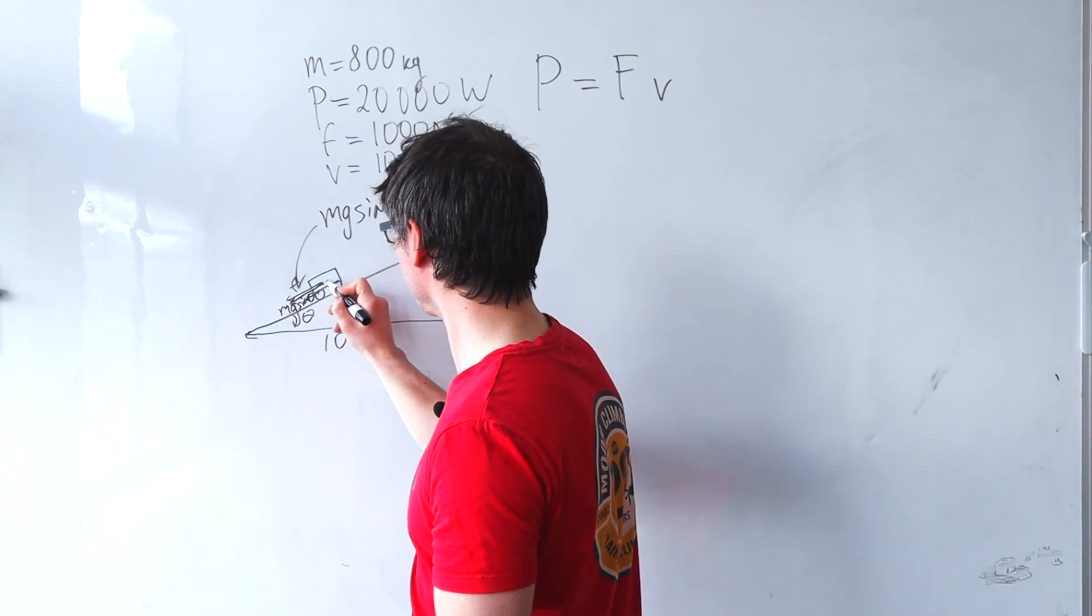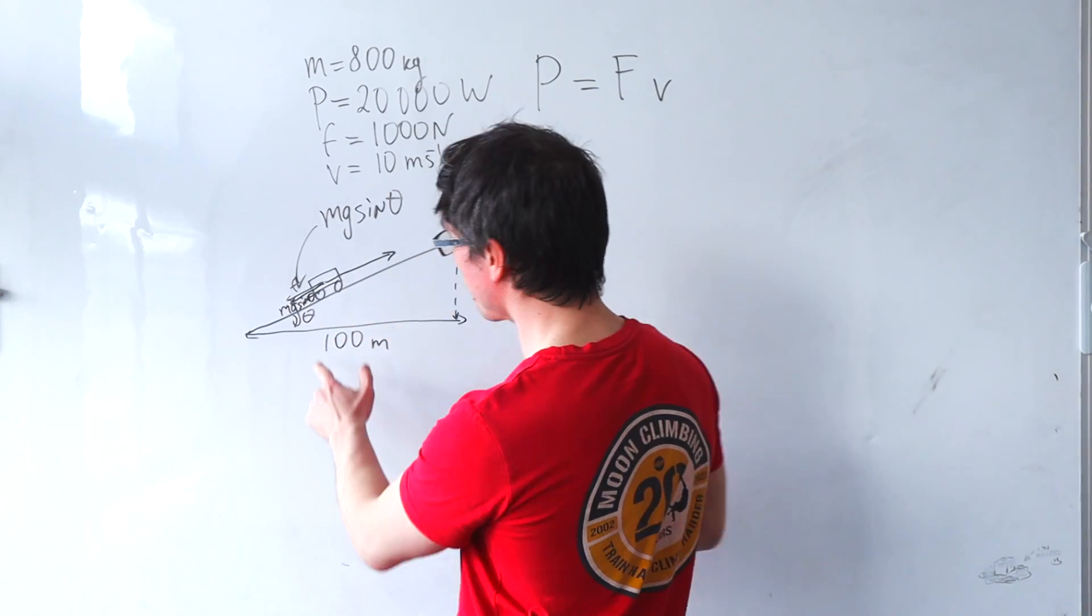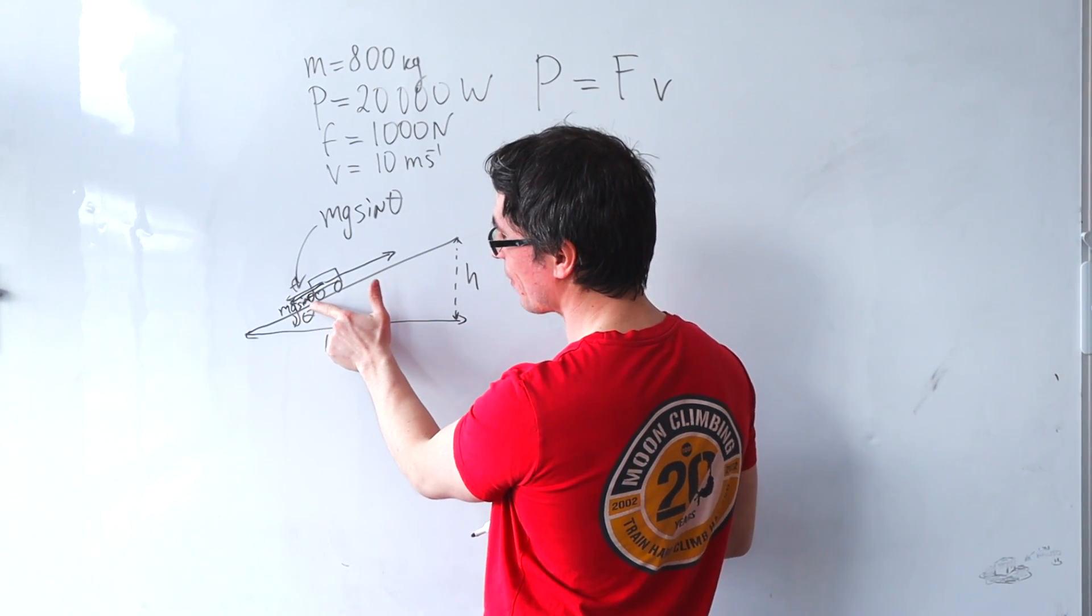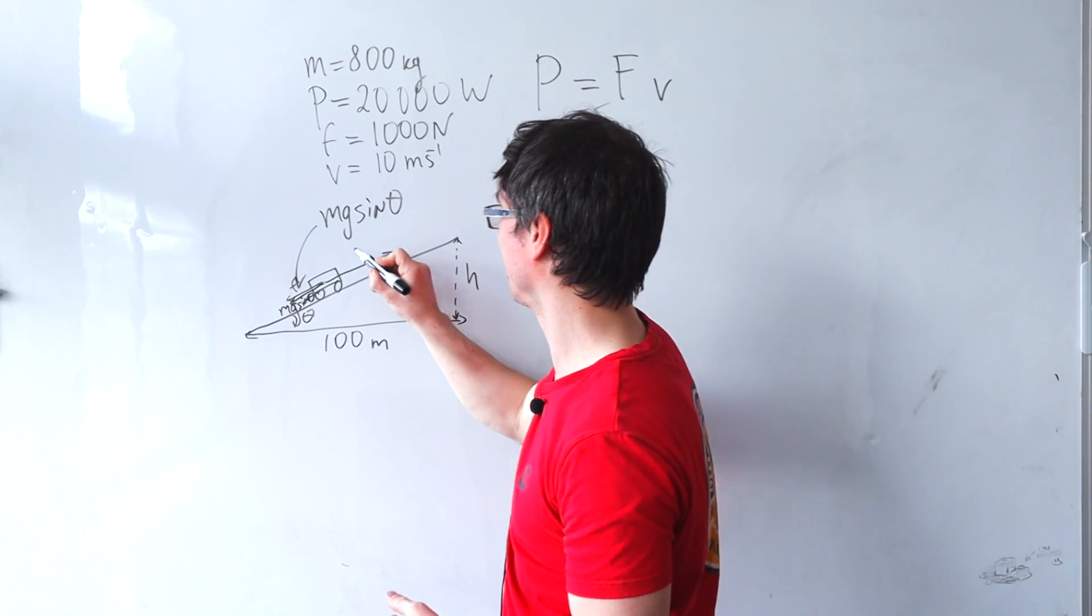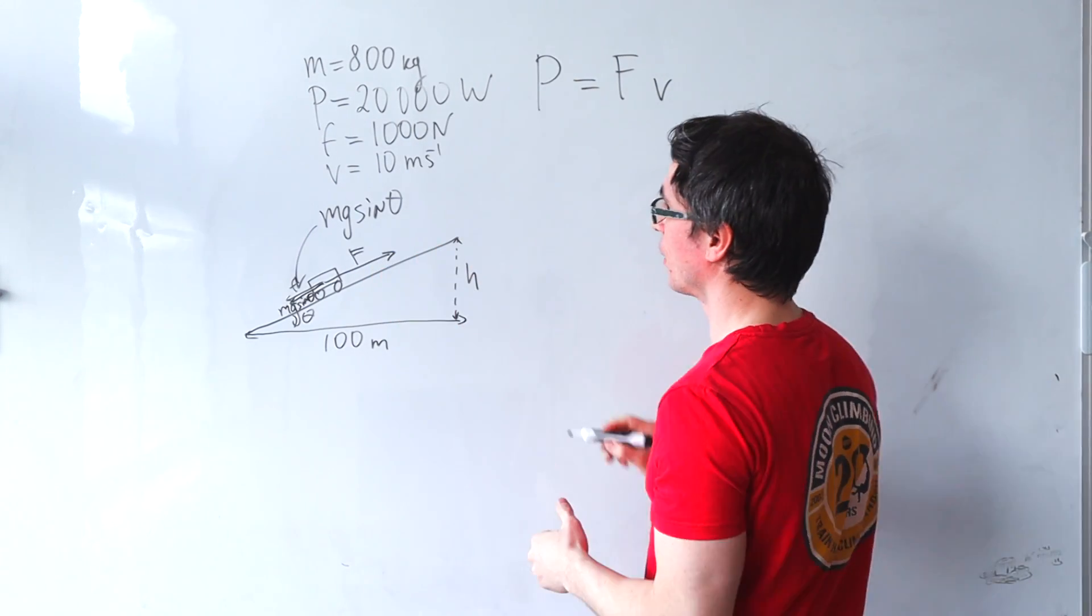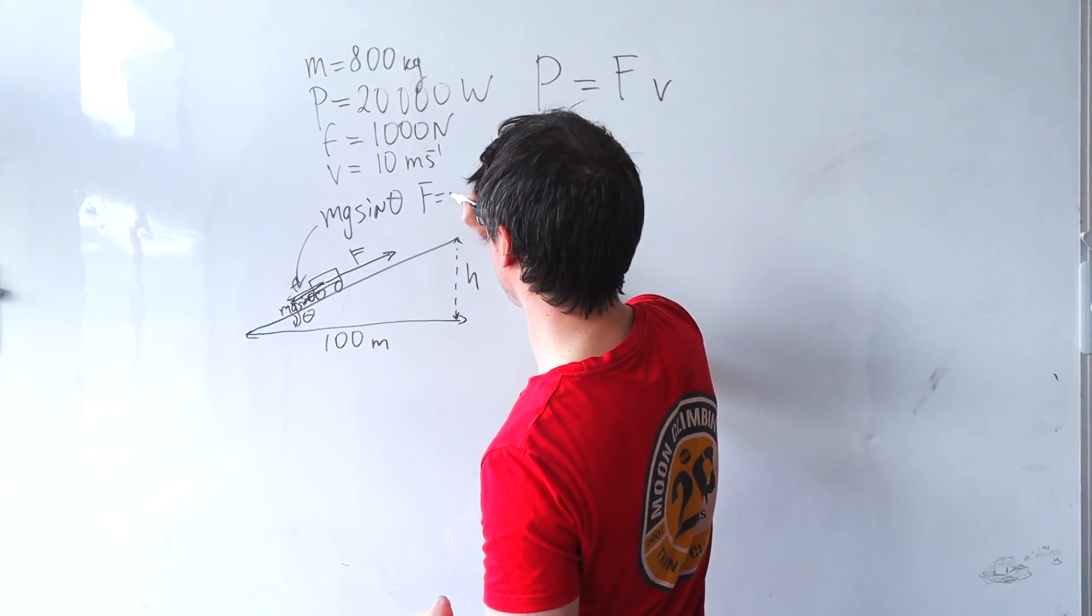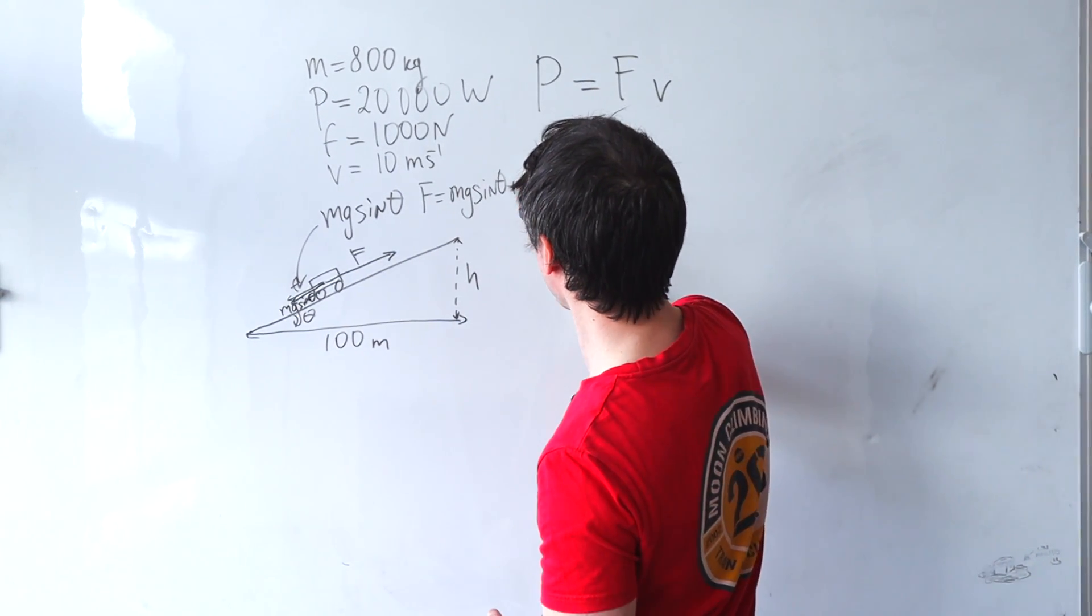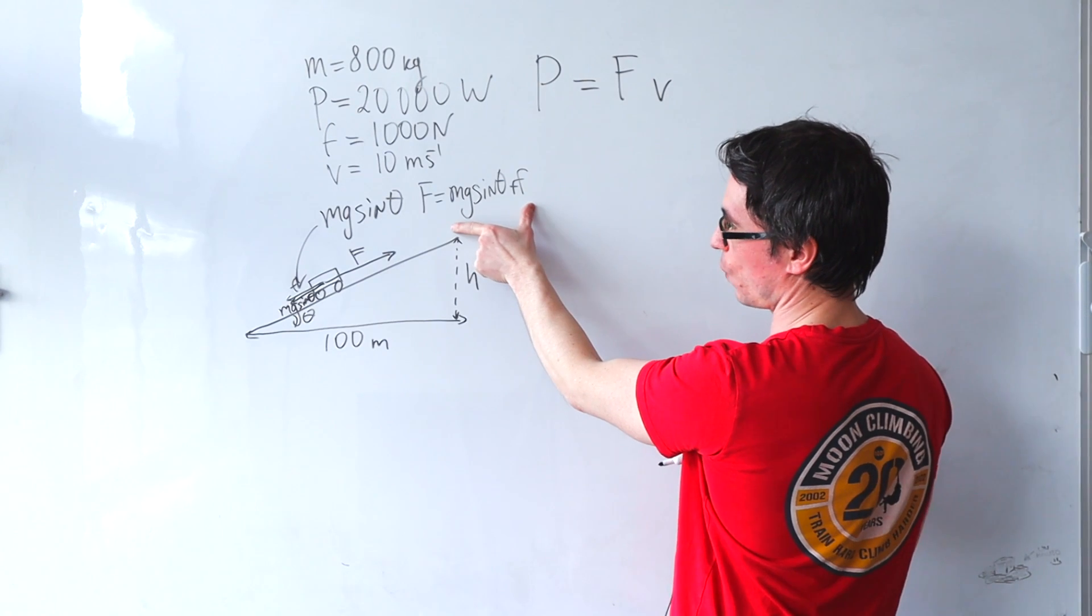The force from the engine will have to balance out both the frictional force and the component of the weight along the slope. So we can say that F will be mg sine theta plus the force f.